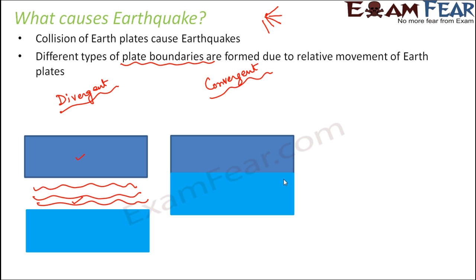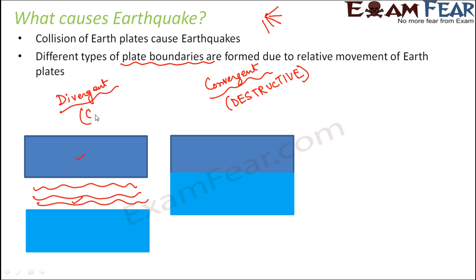Convergent collision can occur at continent-to-continent boundaries. When two continents separated by an ocean basin collide, it can result in the closure of those ocean basins and intense earthquakes. So this is a destructive plate boundary, because it causes a lot of destruction. In contrast, the divergent plate boundary is considered constructive, since it results in the formation of ocean basins. The convergent boundary destroys ocean basins, and the resulting earthquakes are also intense, causing severe destruction.